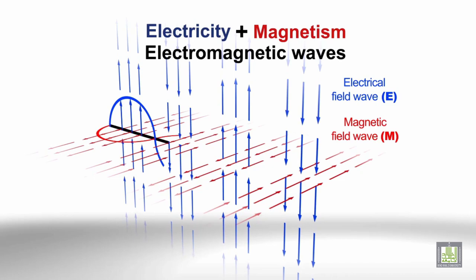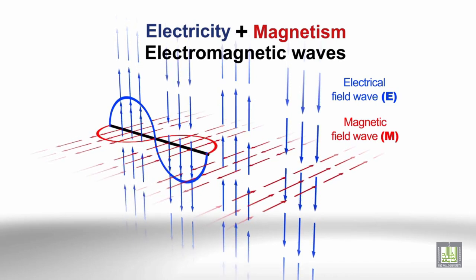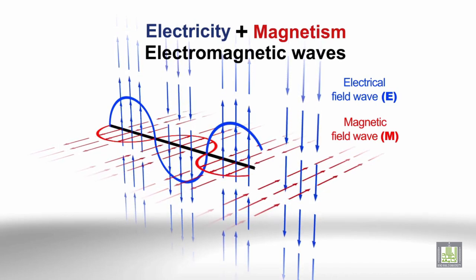Electromagnetic waves are formed when an electric field couples with a magnetic field.